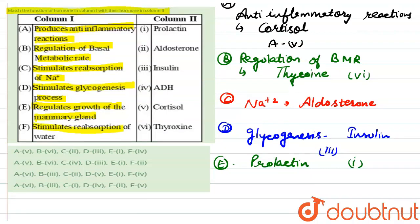The last function is stimulate reabsorption of water. This reabsorption of water is carried out by a pituitary gland hormone named ADH, which is also known as anti-diuretic hormone. This corresponds to the fourth option.